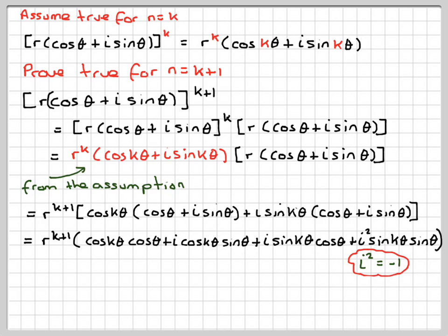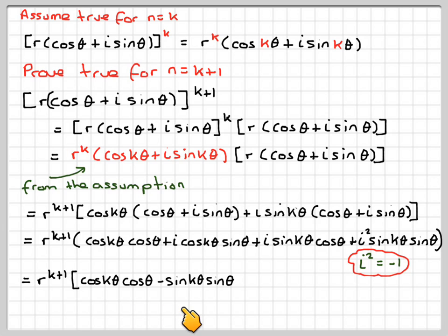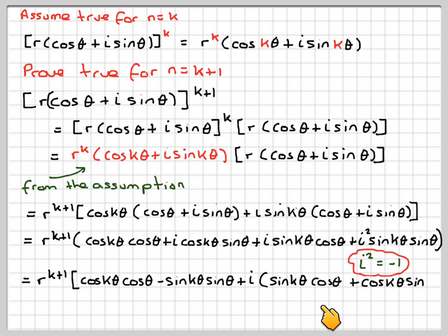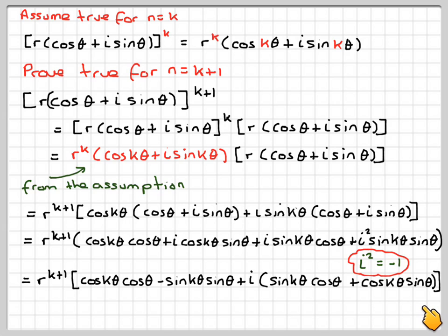So that's a real number. We're going to put the real bits and the imaginary bits together. So we're going to have r to the k+1, then cos(kθ)cos θ − sin(kθ)sin θ, plus i times sin(kθ)cos θ + cos(kθ)sin θ.